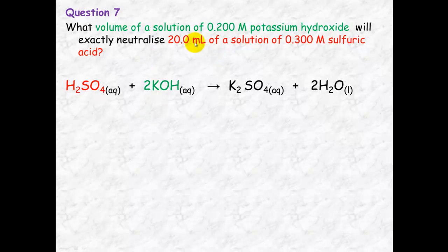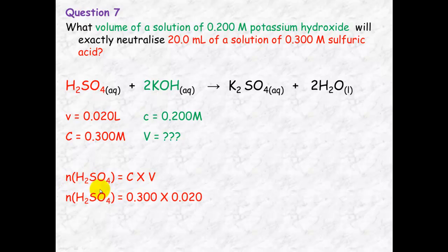Look at the information the question gives you. The known information. The volume equals 20 mil, which you must change to liters. And the concentration is 0.300 molar. Your concentration of your unknown is 0.200 molar. And we're trying to calculate the volume. Again, we've got the C and the V of the known substance. So we can calculate the number of mole. Number of mole equals concentration times volume. So that equals 6.00 by 10 to the negative 3 mole.